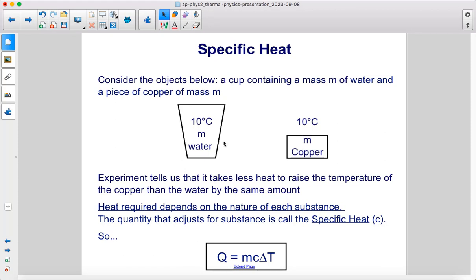Consider the objects below: a cup containing a mass m of water and a piece of copper of mass m, both at 10 degrees Celsius. Experiment tells us that it takes less heat to raise the temperature of the copper than the water by the same amount. Heat required depends on the nature of each substance. The quantity that adjusts for substance is called the specific heat, C, so Q is directly proportional to mass, specific heat, and change in temperature.